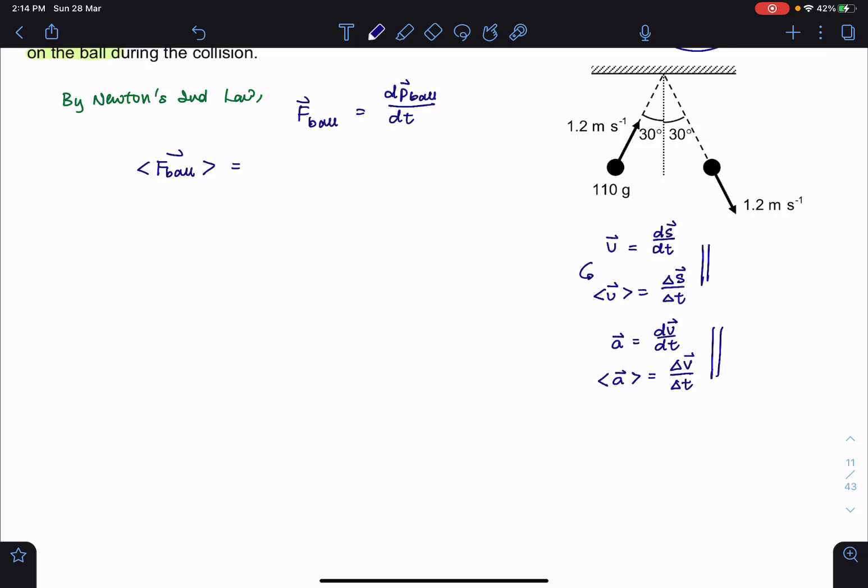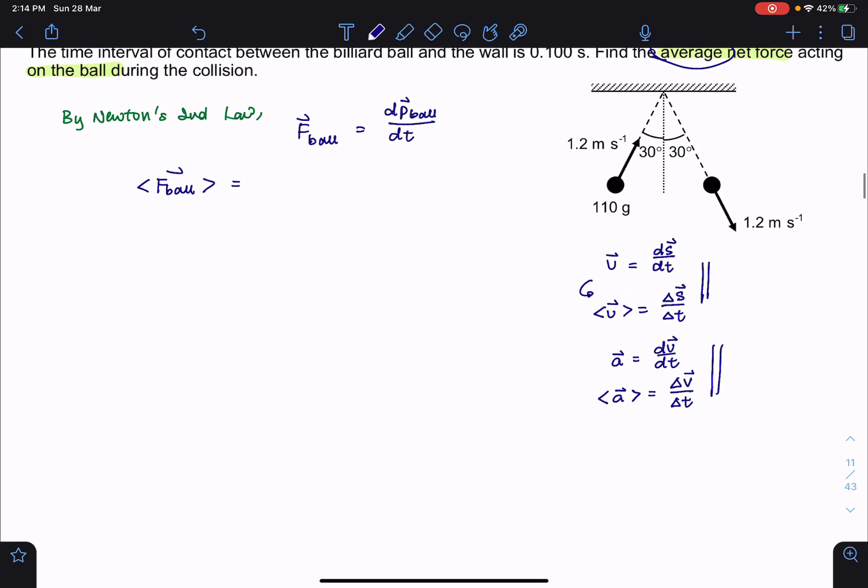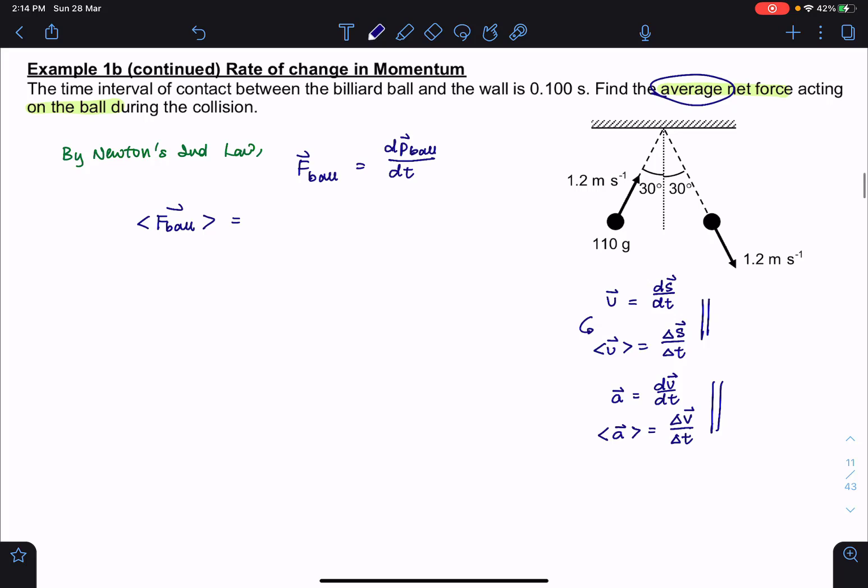So similarly down here, we have F equals dp/dt. If you make a guess, and I hope you can see the relationship between all these, then you'll be able to tell that actually the average force, what we want to see is the total effect. So it's the total change in momentum of the ball divided by the total time taken.